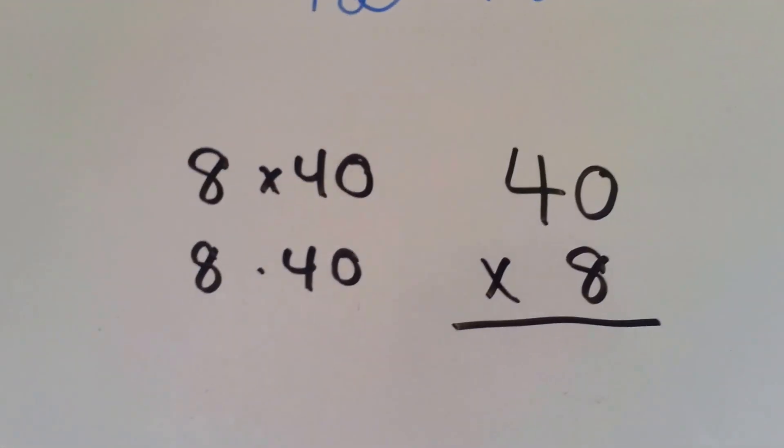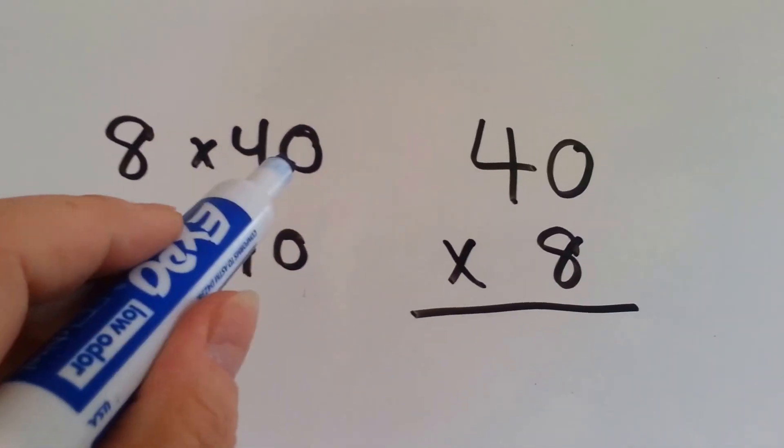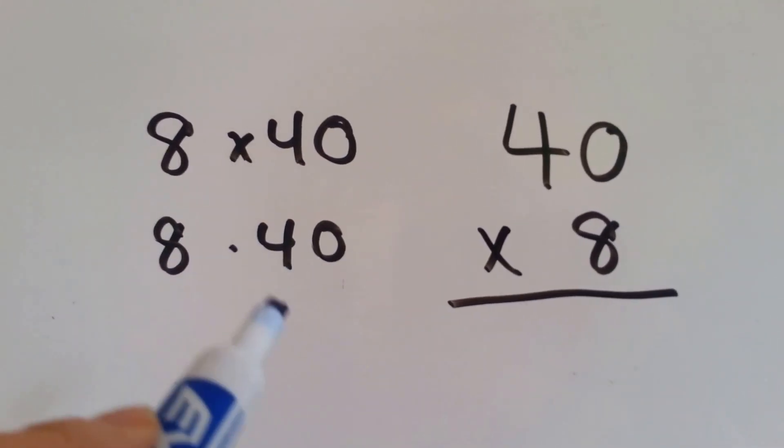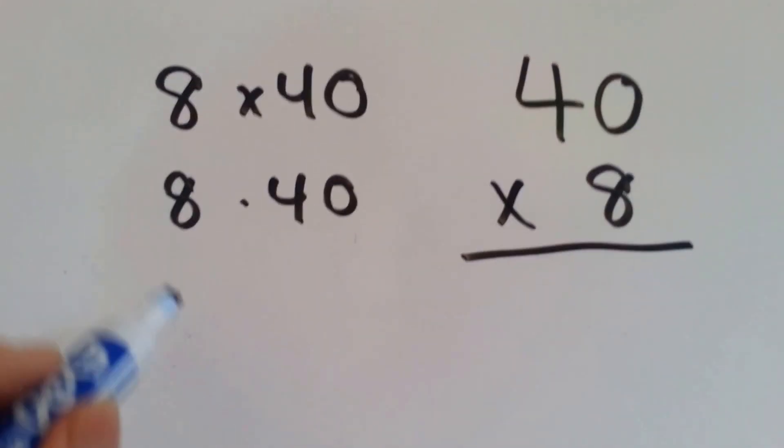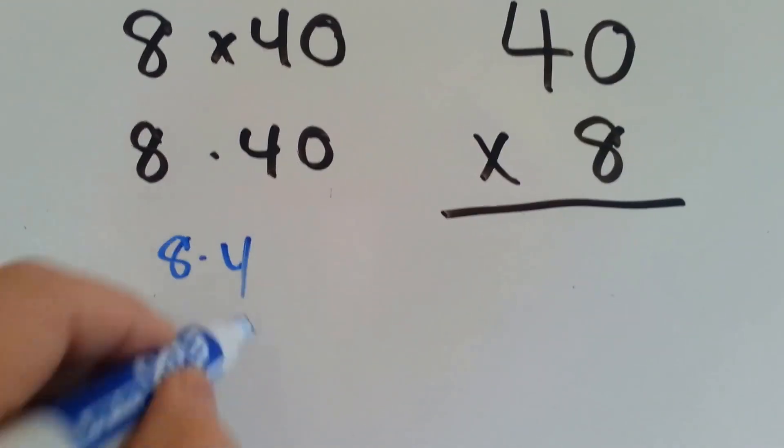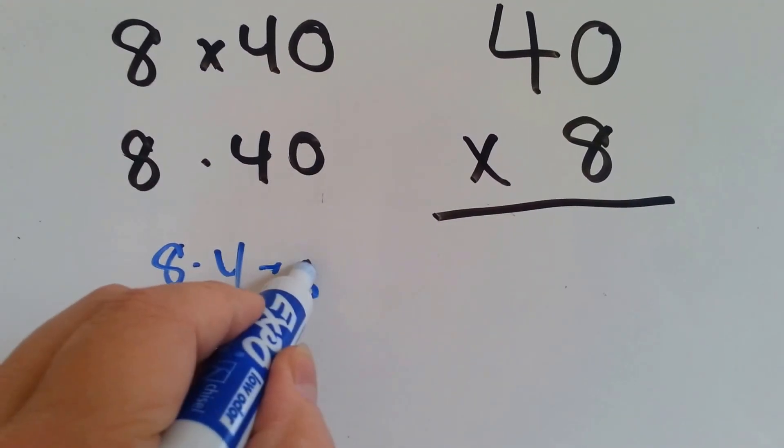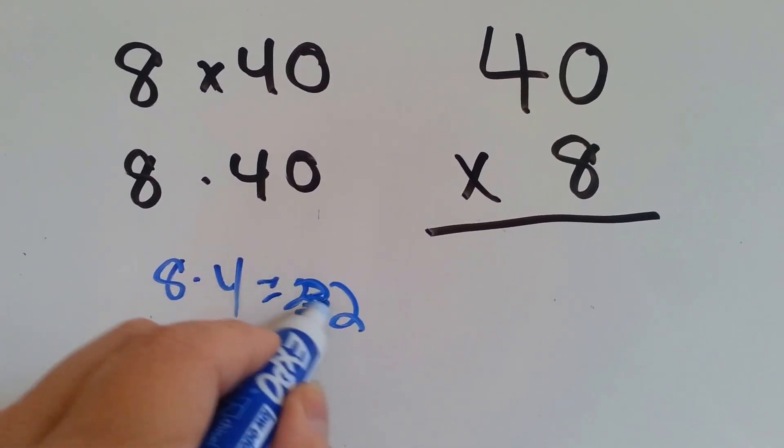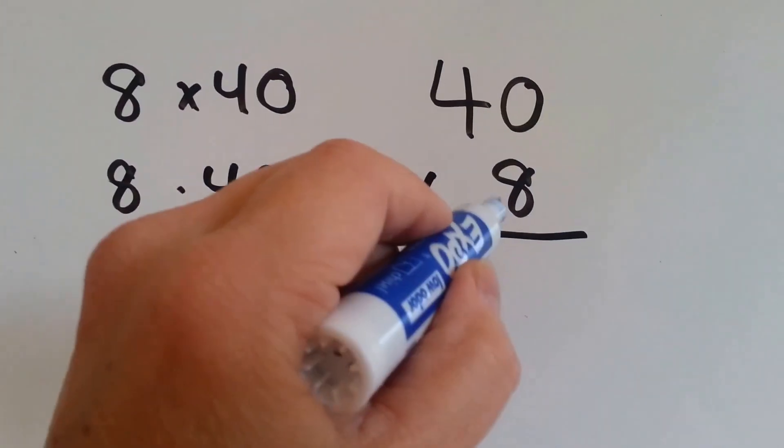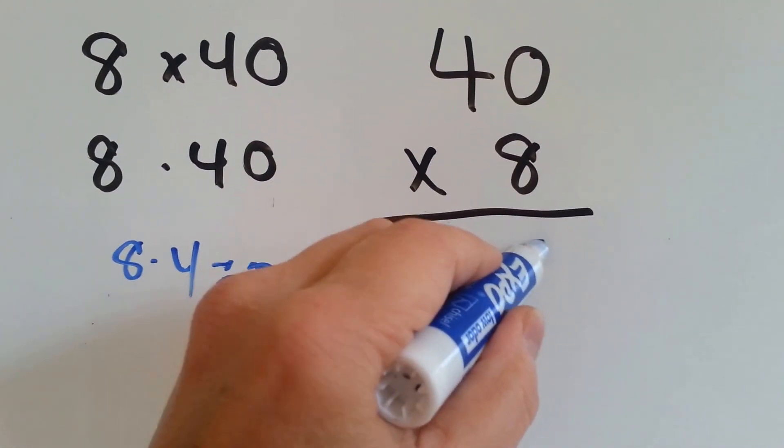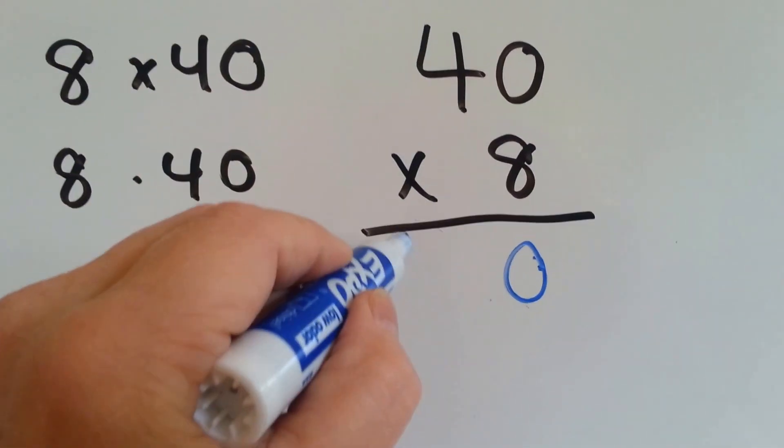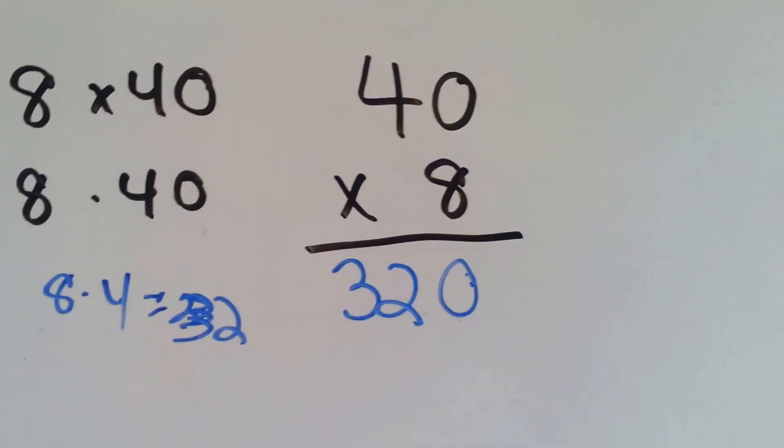Let's try this one. 8 times 40. Written with a dot, it's 8 times 40 like that. Do you know what 8 times 4 is? 8 times 4 equals 32. Let's try it. 8 times 0 is 0, and 8 times 4 is 32. So our answer is 320.